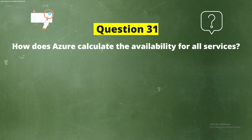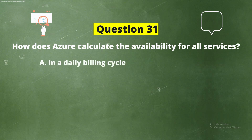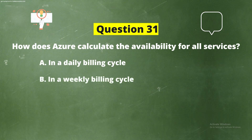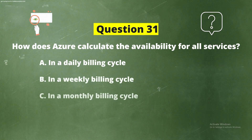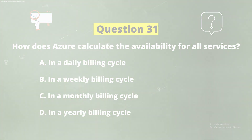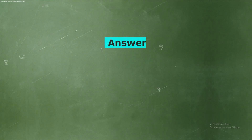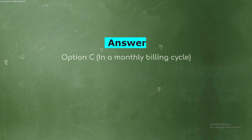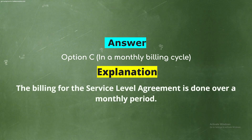The options are: Option A, in a daily billing cycle; Option B, in a weekly billing cycle; Option C, in a monthly billing cycle; Option D, in a yearly billing cycle. The correct answer is Option C, in a monthly billing cycle. Explanation: the billing for the service level agreement is done over a monthly period.